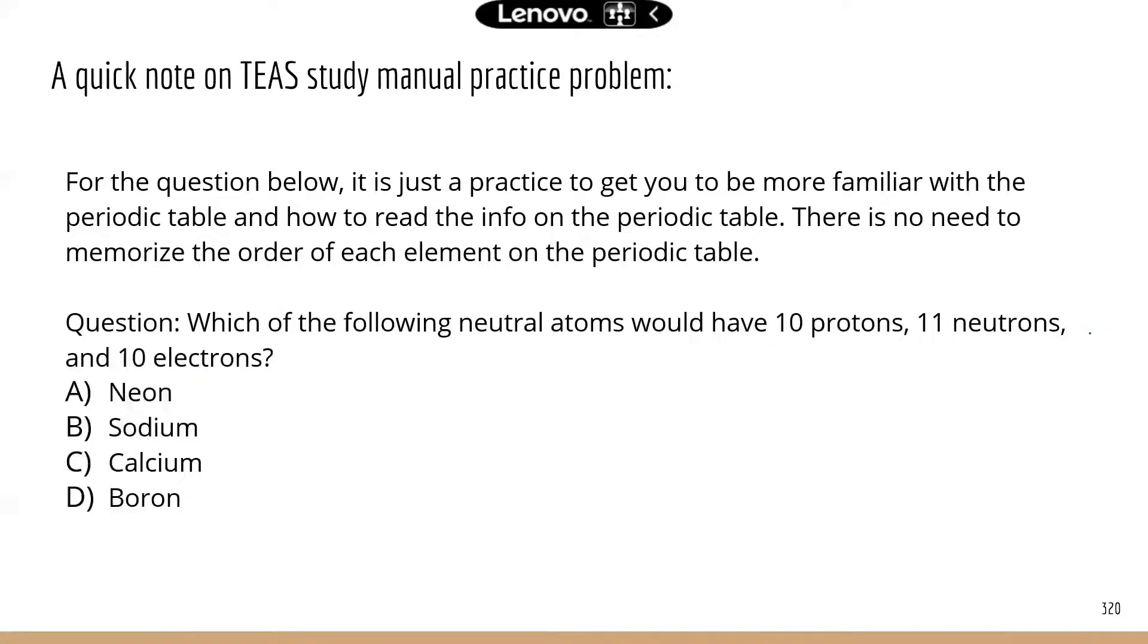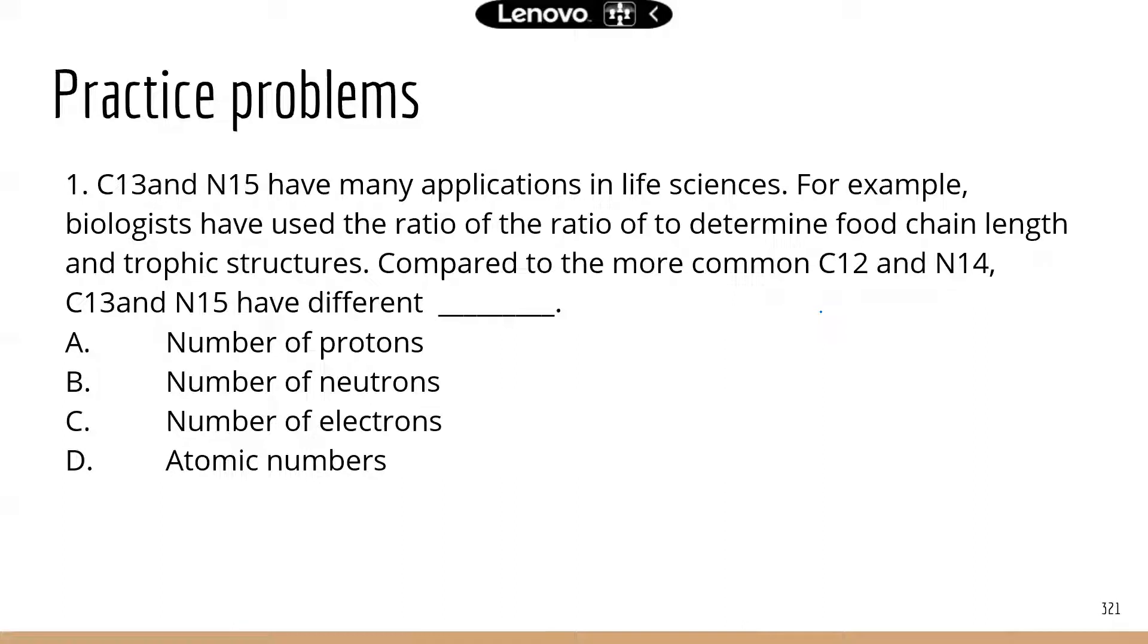I want to note something from the TEAS study manual. There are some questions that require you to look up the periodic table. Don't worry about memorizing anything. If you see a question like this, there will be a periodic table provided to you. You can just click somewhere, get the periodic table out, and use that information to answer the questions. In here it asks you which neutral atom would have 10 protons, 11 neutrons, and 10 electrons. You actually only need this information, because the number of protons is the same as atomic number. Go to the periodic table, find the 10th element, and that will be the correct answer.